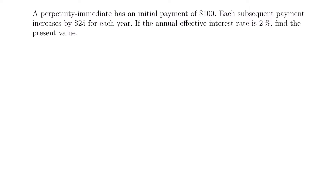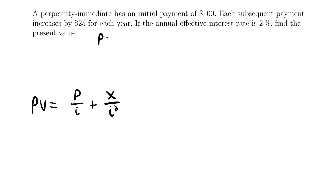If you watched our lesson, we know that the present value is equal to P divided by i plus X divided by i squared, where P is your initial payment and X is the amount it increases by every year, and i is your interest rate. From this problem: the initial payment is $100, so P equals 100. Each subsequent payment increases by $25, so X equals 25. The annual effective interest rate is 2%, so i equals 0.02.